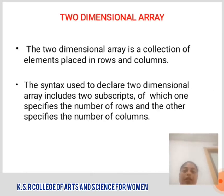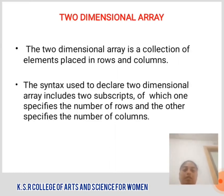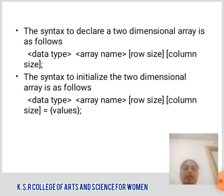2-Dimensional Array: The 2-Dimensional Array is a collection of elements placed in rows and columns. The syntax used to declare a 2-Dimensional Array includes two subscripts, one to specify the number of rows and another to specify the number of columns. The syntax to declare a 2-Dimensional Array is: data_type array_name[row_size][column_size]. The syntax to initialize the 2-Dimensional Array is: data_type array_name[row_size][column_size] = {values}.